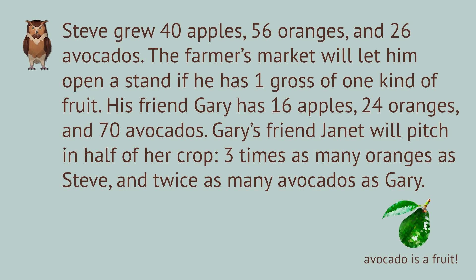Steve is growing some delicious fruit in his backyard. He harvests 40 apples, 56 oranges, and 26 avocados. That's too many for him to eat, and he'd like to sell them, but the farmer's market in his town has some very strict rules. You can only sell one kind of fruit at your fruit stand, and you have to have at least a gross — that's 12 times 12 pieces of fruit — or they won't rent you a spot.